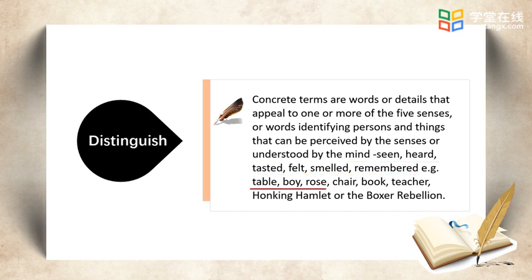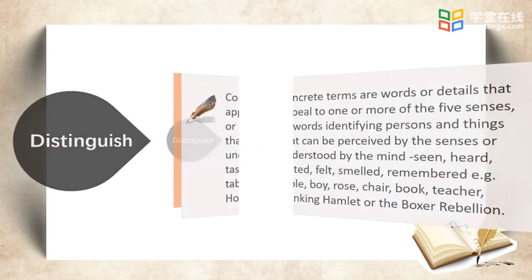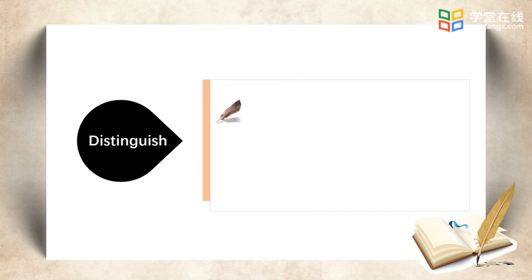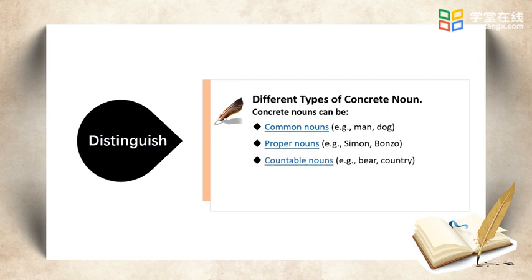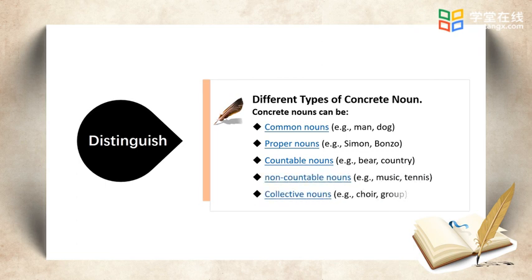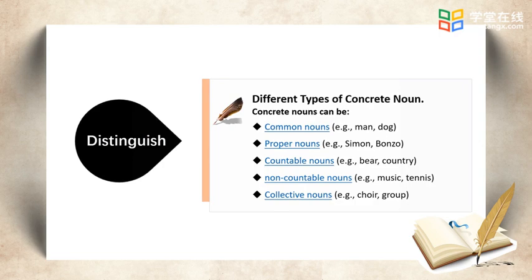For example: table, boy, rose, chair, book, teacher, honking, hamlet, or the box rebelling. Here are different types of concrete nouns. Concrete nouns can be: common nouns — man, dog; proper nouns — Simon, Bonzo; compound nouns — bear, country; non-compound nouns — music, tennis; collective nouns — quals, group.